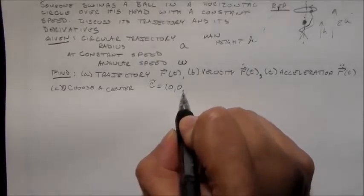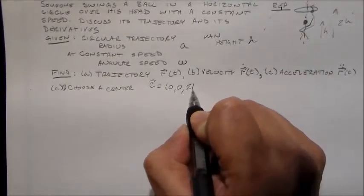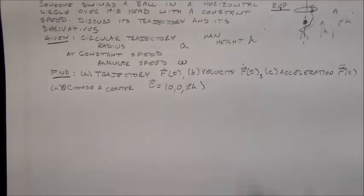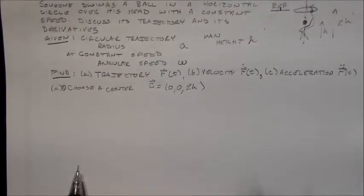And I'll start with a center C equal to 0, 0, 2h. So it's right over his head. So I'm going to make this axis the z axis. So the height up here is 2h, and 0, 0, 2h, all right?